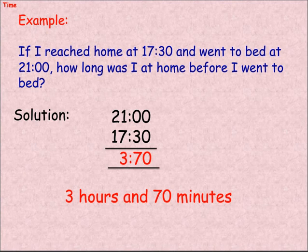Example: If I reached home at 17:30 and went to bed at 21:00, how long was I at home before I went to bed? Solution: 21:00 subtract 17:30 equals 3 hours and 30 minutes.